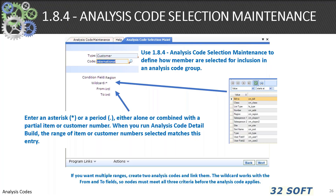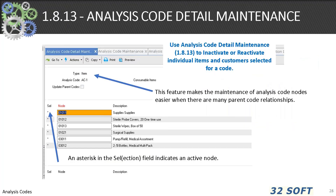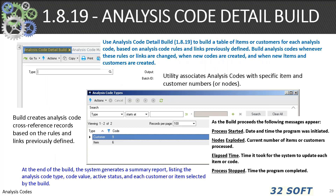The rules you define will not take effect until you run 1.8.19. Use 1.8.7 analyst code link maintenance to join existing analyst codes together to create larger or more complex analyst code groupings. The 1.8.13 analyst code detail maintenance is used to inactivate or reactivate individual items and customers for the detail build. Use 1.8.19 analyst code detail build to build the table of items and customers for each analyst code based on the rules and links defined. Build analyst codes whenever rules or links are changed, when new codes are created, or when new items or customers are created — possibly in a batch at night or weekly.